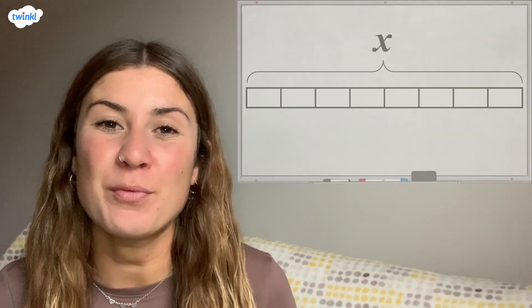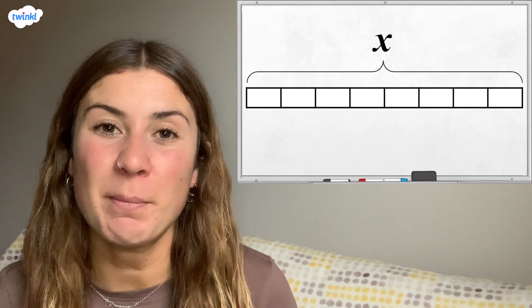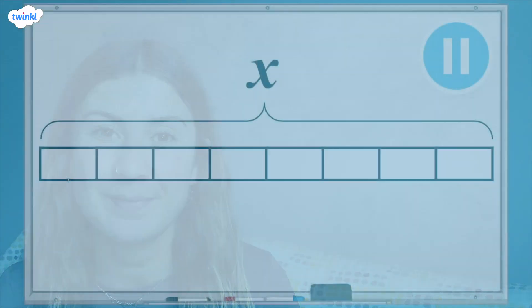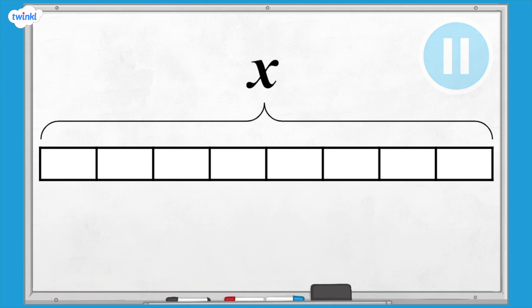This bar represents x. What would each part of the bar be equal to? That's right, there are eight equal parts so the value of each part would be x divided by 8 or one eighth of x.